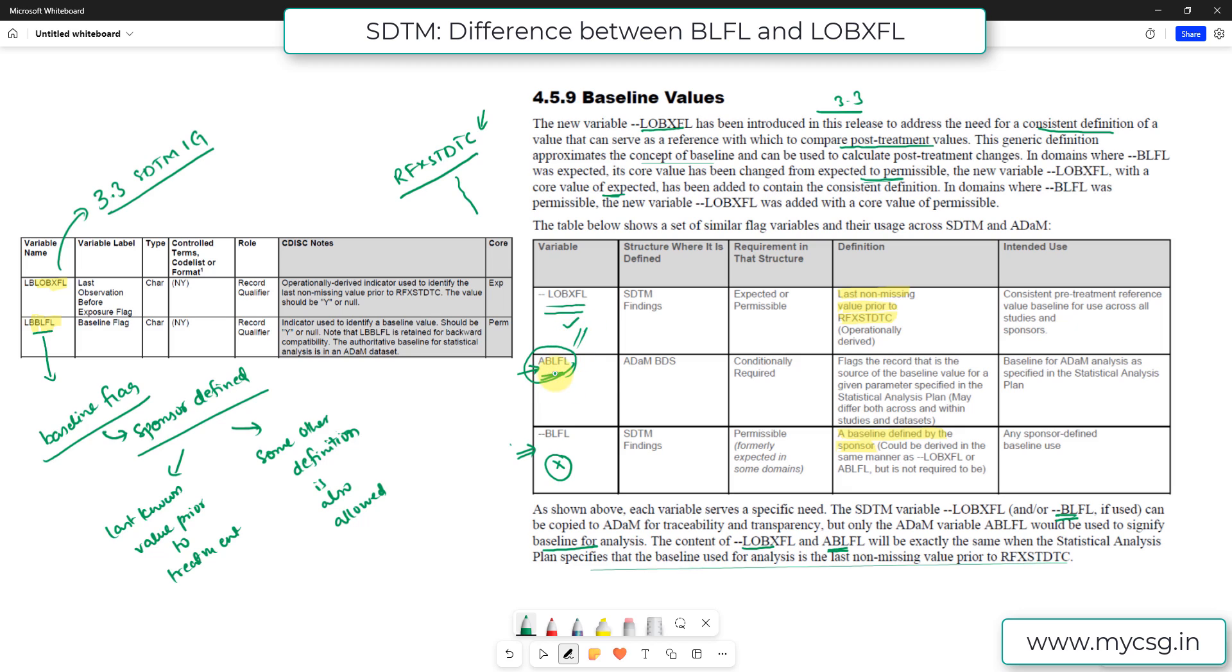But for analysis purposes, the definition can vary from dataset to dataset and also from parameter to parameter within a dataset as per the statistical analysis requirements. So you have more scope to have different definitions for ABLFL when compared to BLFL than your LOBXFL. So wherever you are creating LOBXFL, it must be your last non-missing value prior to RFXSTDTC. It is having the most stringent definition.